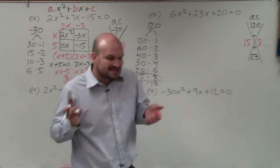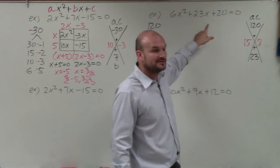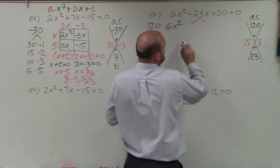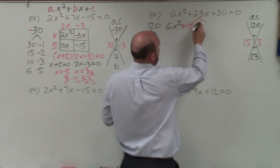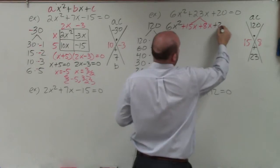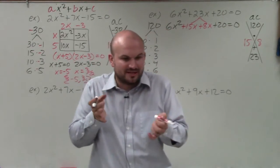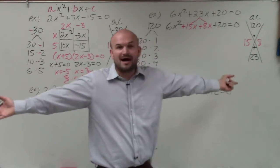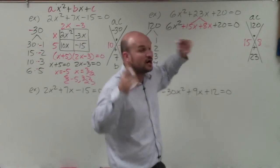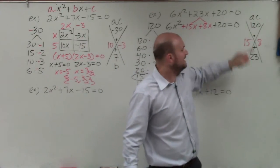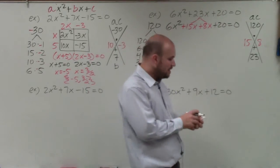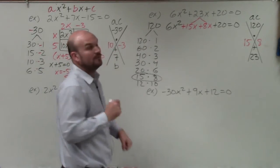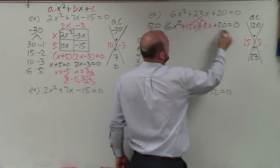If you don't like the box method, please understand that 15 and 8 replace the middle term. We can use another factoring technique — factoring by grouping. We rewrite 23x as positive 15x plus 8x, so the equation becomes 6x squared plus 15x plus 8x plus 20 equals 0. All we're doing is breaking apart 23x into 15x and 8x, because those are the only two numbers that multiply to give you 120 and add to give you 23. Now we took a trinomial and made it a polynomial with four terms.